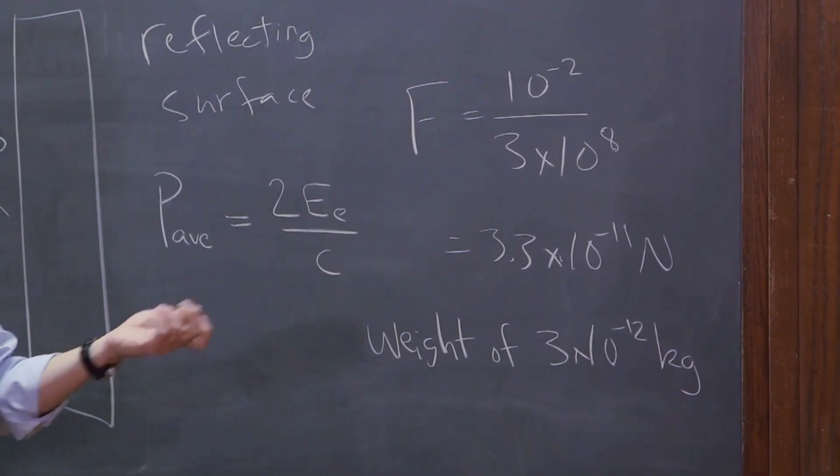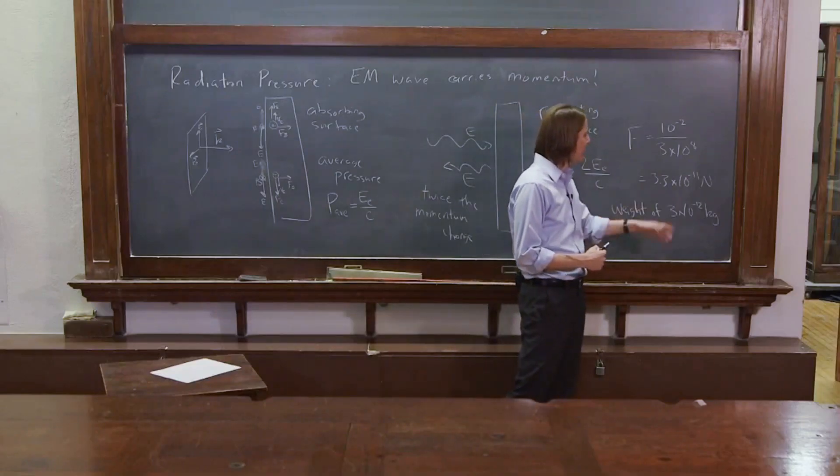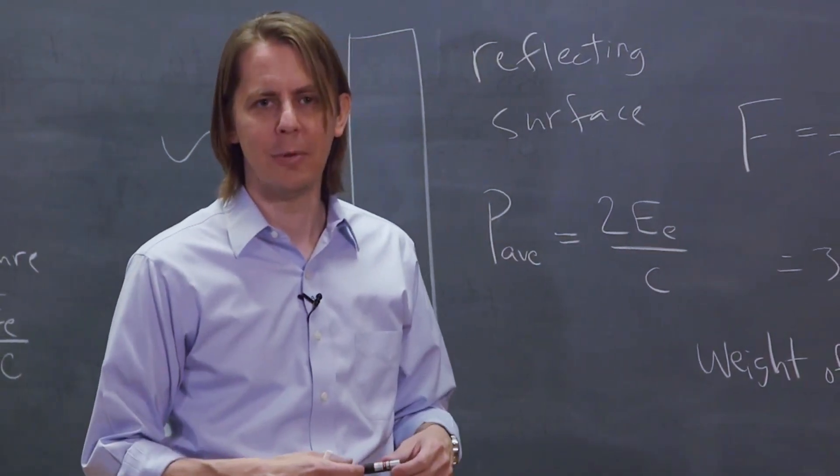Right? So a mosquito is a milligram. You've got to go down a factor of a million below a mosquito. Get down to a single cell in the mosquito. And that's about how much force. The weight of that is about how much force I applied to the white paper. Okay?